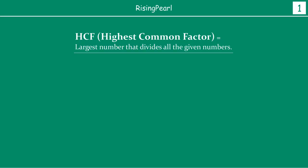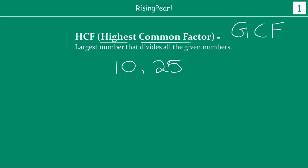HCF, which we have seen in the last few videos, is nothing but Highest Common Factor. Sometimes HCF is also referred to as GCF — simply by replacing the word 'highest' with 'greatest.' They mean the same thing. HCF means the largest number that divides all the given numbers. For example, if I have 10 and 25, HCF means the largest number that can divide both 10 and 25.